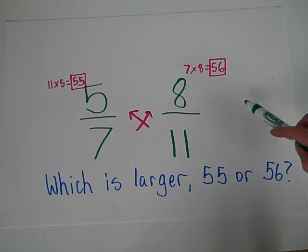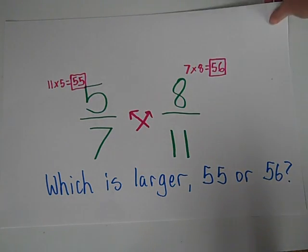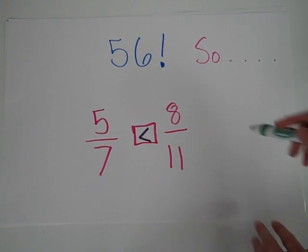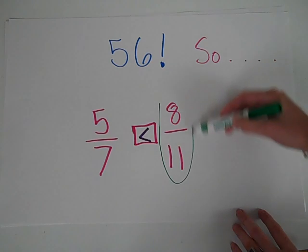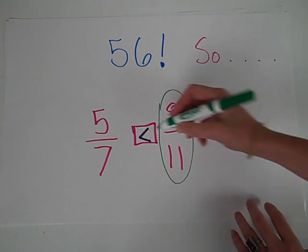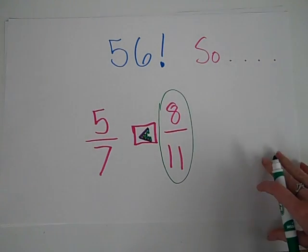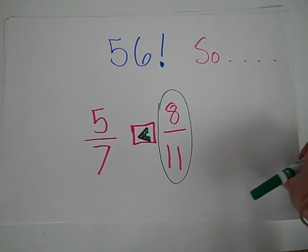56 is larger, so 8 elevenths is larger than 5 sevenths. And again, the open alligator teeth go towards the larger fraction.